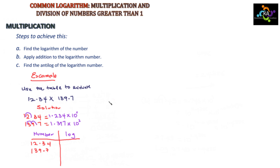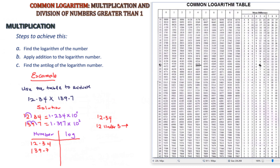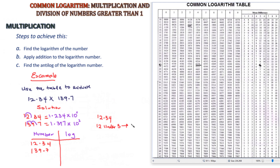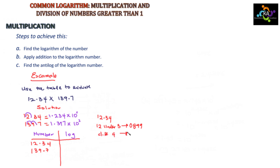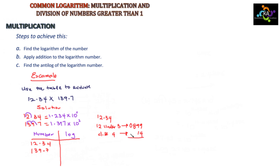To find the logarithm of 12.34, look up 12 under column 3 in the log table — that gives 0899. Then check the difference column for 4, which gives 14. Add 14 to 0899.